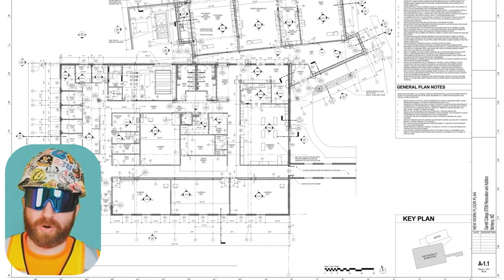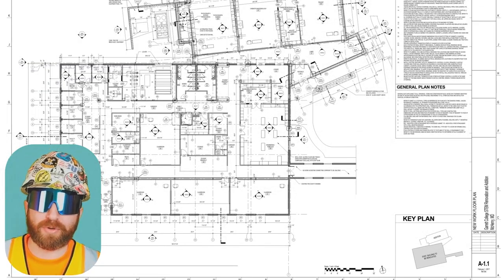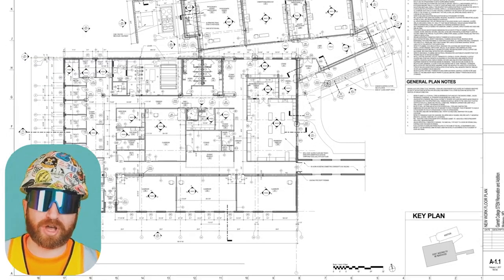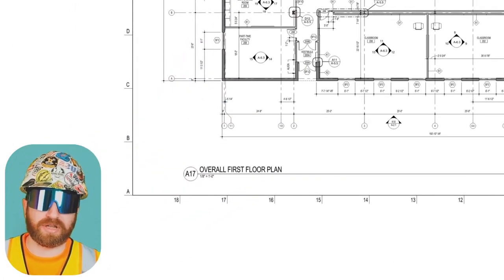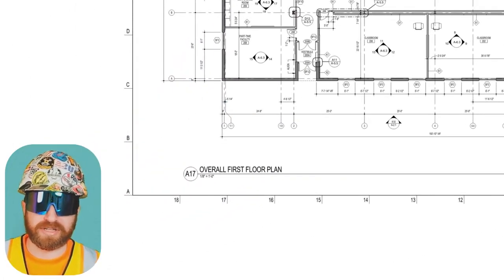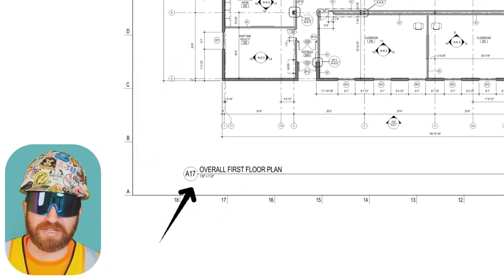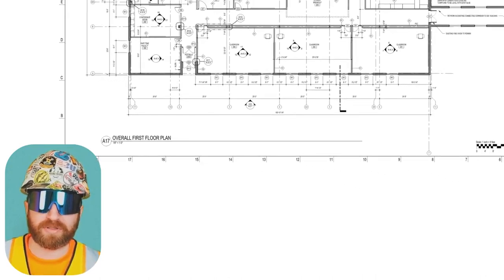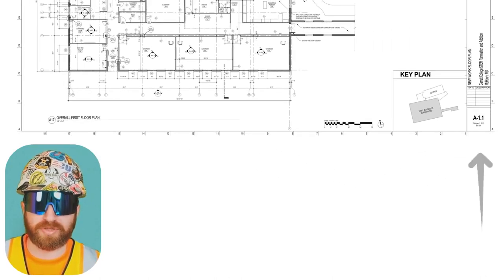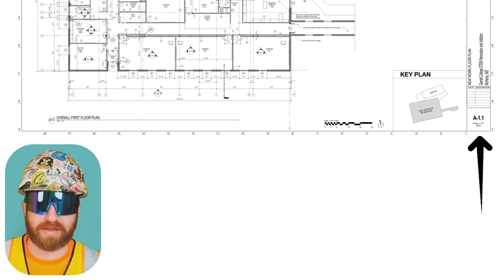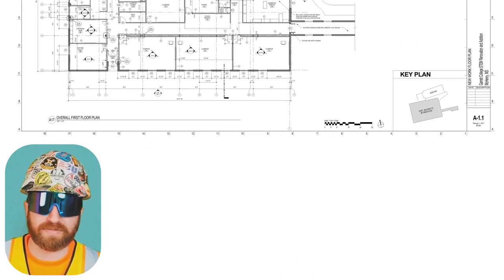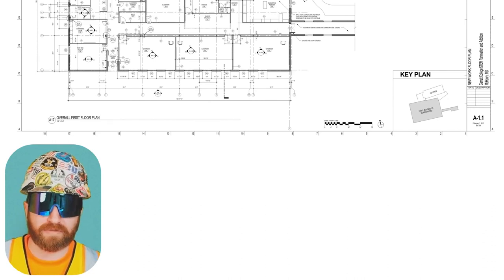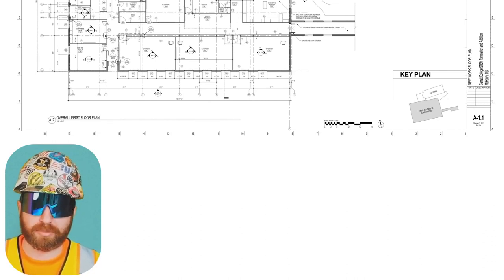Back to A1.1, the new work floor plan. Even though this is showing the entire floor plan, this is still considered a detail — detail number A17, titled 'Overall First Floor Plan.' This is different than the sheet number and sheet title. To navigate to this detail, you'd say: go to A17 on A1.1, starting with the detail number followed by the sheet number.